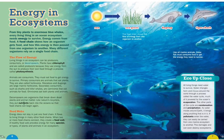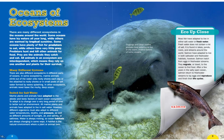Decomposers are organisms that break down dead plants and animal matter — like nature's recyclers. They put nutrients back into the oceans so that food chains can begin again. Food webs: energy does not stay in just one food chain; it flows to living things in many other food chains. When two or more food chains connect, they create a food web. A healthy food web provides energy for many species of plants and animals in an ecosystem.